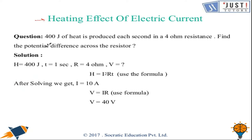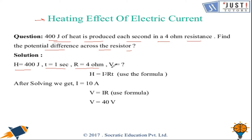Here is an example. 400 joules of heat is produced in a 4 ohm resistance in 1 second — find the potential difference across the resistance. So H = 400 J, time = 1 second, R = 4 ohms. Using the formula H = I²RT and solving, we get I = 10 A. Then putting this value into V = IR: V = 10 × 4 = 40 volts.